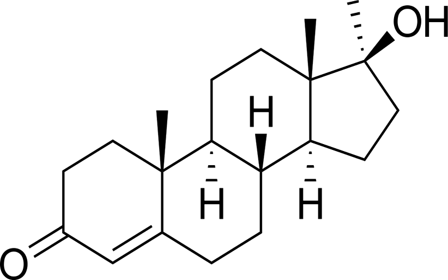Methyltestosterone, also known as 17-alpha-methyltestosterone or as 17-alpha-methylandrost-4-en-17β-ol-3-one, is a synthetic 17-alpha-alkylated androstane steroid and a derivative of testosterone differing from it only in the presence of a methyl group at the C-17-alpha position. Close synthetic relatives of methyltestosterone include metandienone (17-alpha-methyl-delta-1-testosterone) and fluoxymesterone (9-alpha-fluoro-11-beta-hydroxy-17-alpha-methyltestosterone). Methyltestosterone and ethyl testosterone (17-alpha-ethyltestosterone) are the parent structures of all 17-alpha-alkylated AAS. Major 17-alpha-alkylated AAS include the testosterone derivatives fluoxymesterone, metandienone, methandrostenolone, and methyltestosterone, and the DHT derivatives oxandrolone, oxymetholone, and stanozolol.